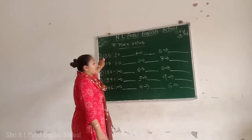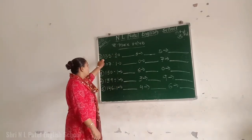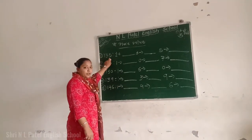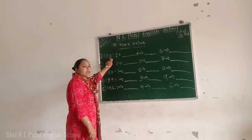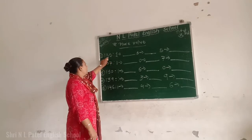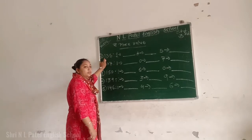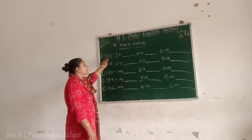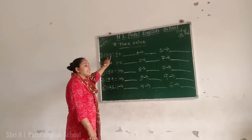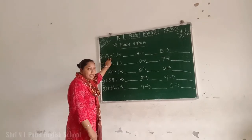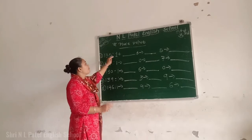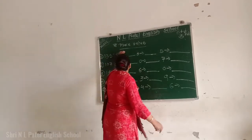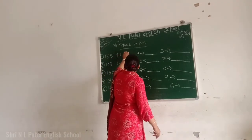You can write the number one hundred thirty-five. There is a place value for each digit in this number. The digit one is in the hundreds place, so it means we use hundreds.